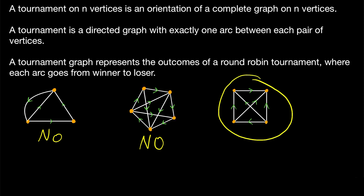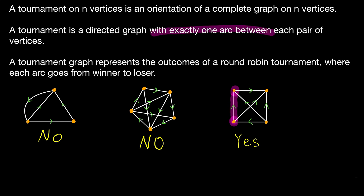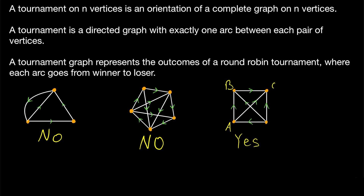How about the last graph — is this a tournament? This one is a tournament. Each pair of vertices has exactly one arc between them, so it's like we started with a complete graph and each edge got assigned one direction. If we label these vertices and think of this as representing a round-robin tournament, this would mean, for example, that Team A beat Team B, Team D beat Team B, Team D beat Team A, and so on. It's telling us the outcome of every match in the round-robin tournament.